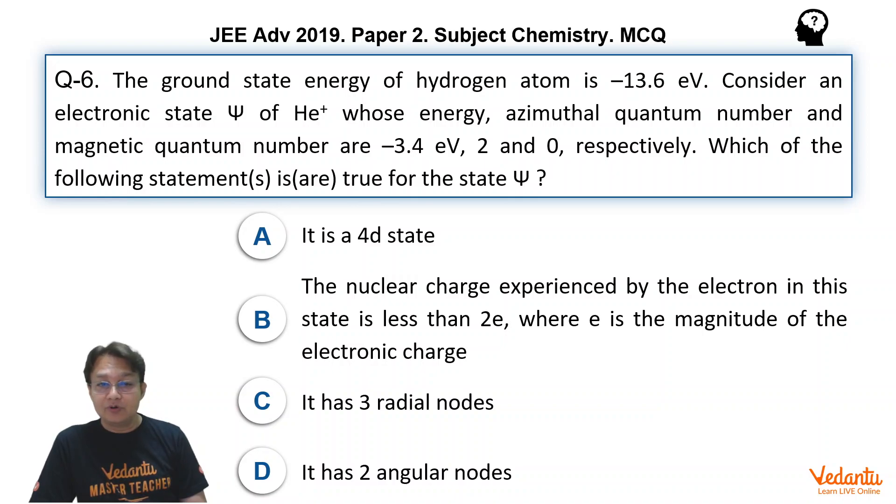Especially if we talk about the B option, straight away we can see it is wrong because it is helium plus ion. And in helium plus ion, 2 protons are there inside the nucleus and there is only a single electron. So the single electron is being pulled by these 2 protons. So effective nuclear charge is equal to 2e. There is no question that the nuclear charge experienced by the electron in this state is less than 2e. It is simply equal to 2e. So straight away we can say option B is incorrect.